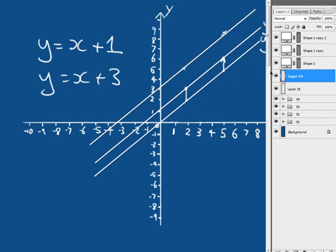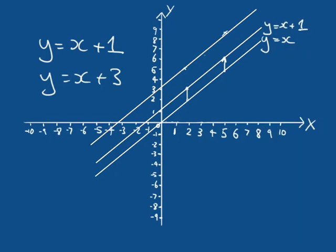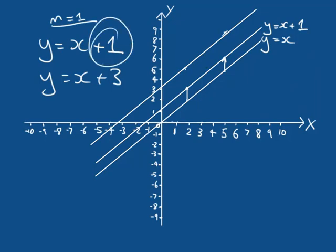Our lines are all parallel — they have the exact same gradient because in all of these cases M equals one. How much we're adding on to that value is translating us up in Y. If we wish to translate down in Y, we simply subtract something from our equation. For example, Y equals X minus one means we're translating down one unit in Y.